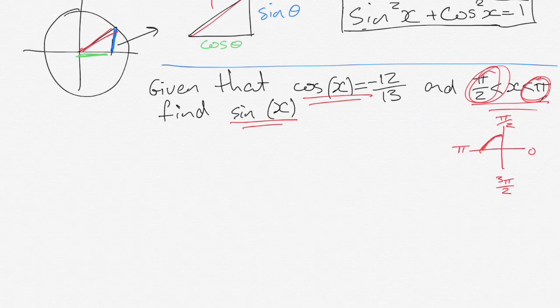That tells us that sin is going to be positive, cos is negative and sure enough it is negative so that makes sense. But we're actually going to use that little bit of information a bit later on. First we need to know what the actual value is that we're then going to make positive or negative as appropriate.